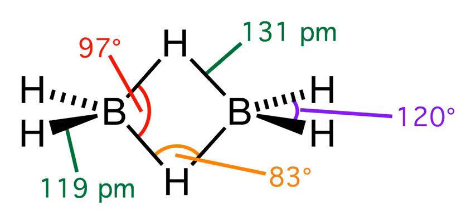8BF3 plus 6LiH yields B2H6 plus 6LiBF4. Laboratory methods start from boron trichloride with lithium aluminum hydride or from boron trifluoride ether solution with sodium borohydride. Both methods result in as much as 30% yield.